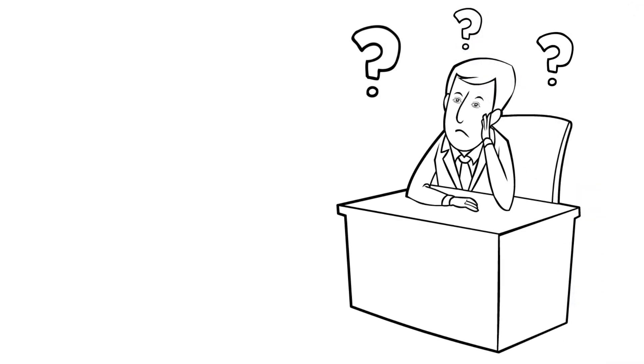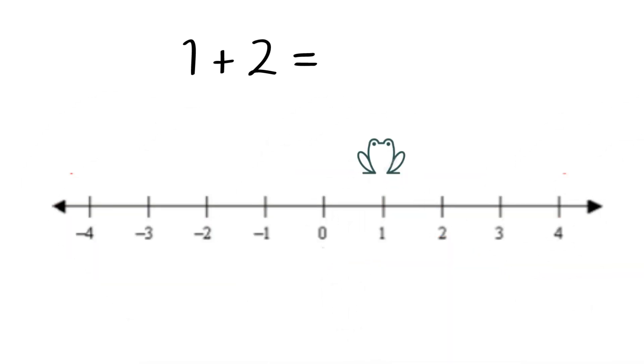...especially those that involve negative numbers can be difficult, but here's a little trick to help you. Let's say we want to solve 1 + 2. First, imagine a number line with a frog sitting on our first number, 1.